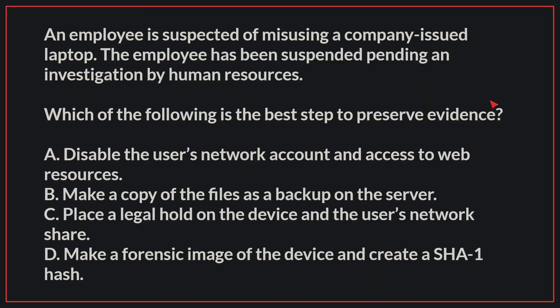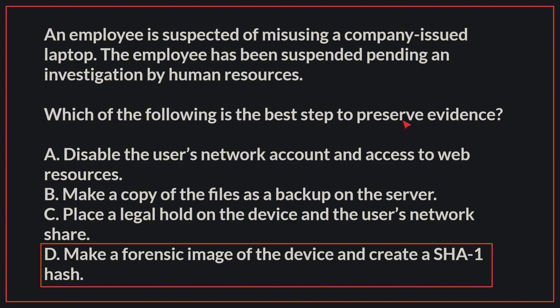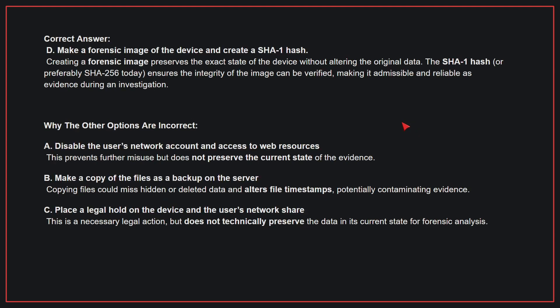An employee is suspected of misusing a company-issued laptop. The employee has been suspended pending an investigation by human resources. Which of the following is the best step to preserve evidence? The correct answer is D: make a forensic image of the device and create a SHA-1 hash. Creating a forensic image preserves the exact state of the device without altering the original data. The SHA-1 hash — or preferably SHA-256 today — ensures the integrity of the image can be verified, making it admissible and reliable as evidence.